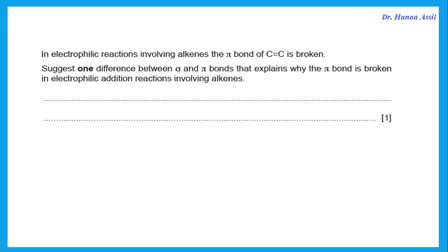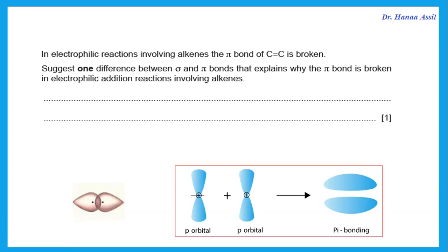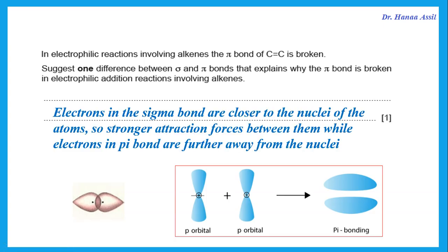This question says: in electrophilic reactions involving alkenes, the pi bond of the C=C is broken. Suggest one difference between sigma and pi bonds that explains why the pi bond is broken in reactions involving alkenes. Remember that when alkenes react, it is the pi bond that breaks, not the single bond. That is because the electrons in the sigma bond are closer to the nuclei of the atoms, so there are stronger attraction forces, while the electrons in the pi bond are further away from the nuclei — therefore, the pi bond is easily broken.